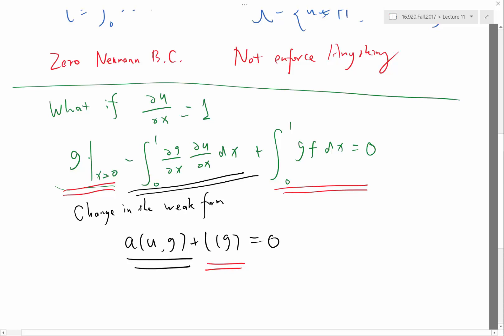Right? So, my l is now different. l of g is g at x equal to 0, this additional term, plus this. Right, so this is my new l.